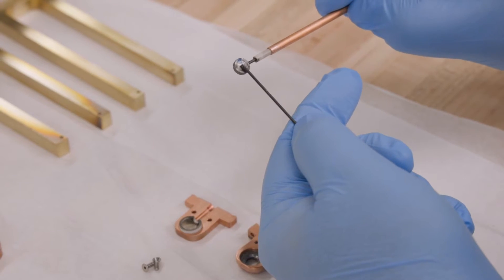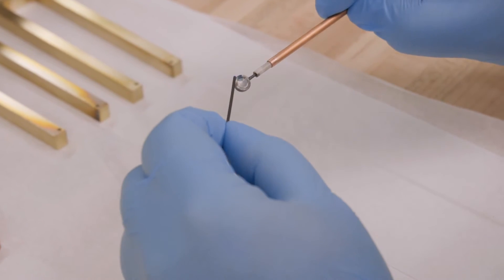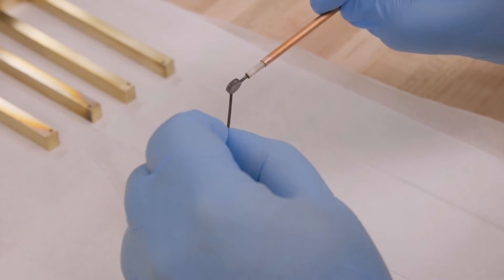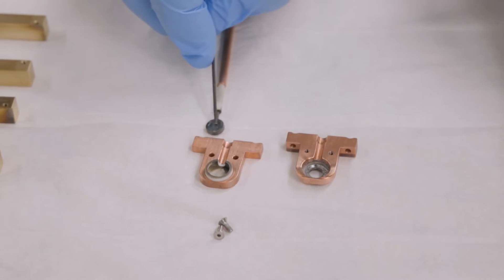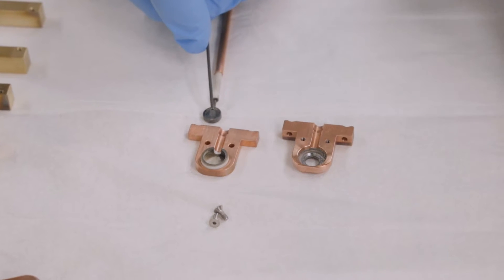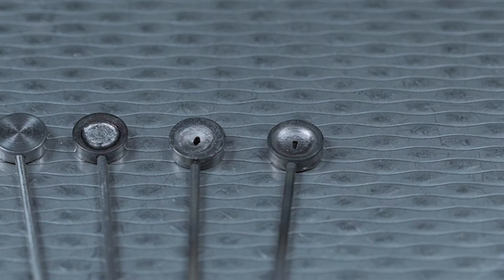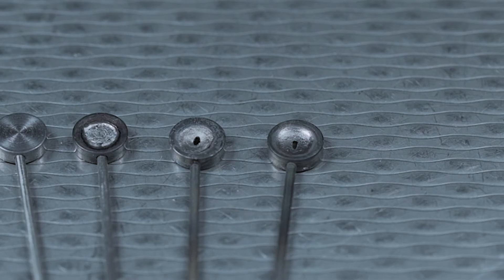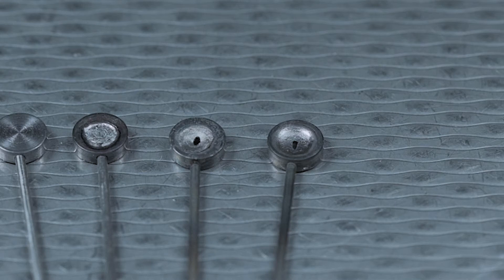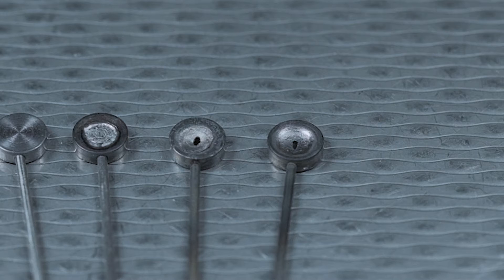Upon inspection, we see that these still have a little bit of life left in them. From left to right, we can compare an unused, a partially used, and two heavily used cathodes which have had substantial erosion to the point of exposing the counter bore for the electrical lead.